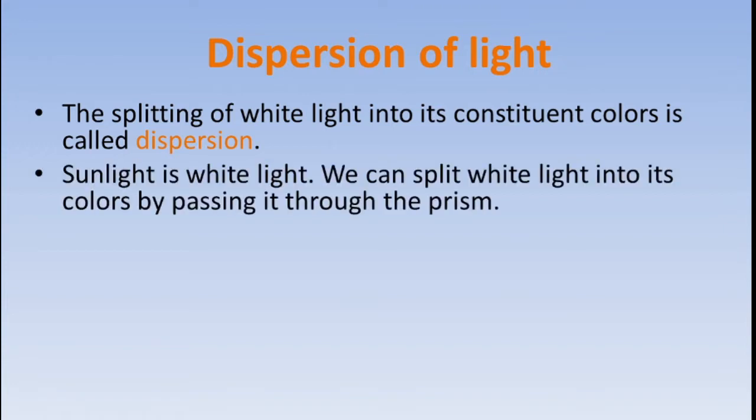White light is a combination of colors. We can split white light into its colors by passing it through a prism.